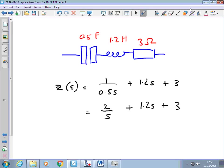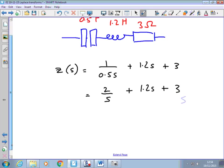Now I want to get them all over S, so what I do is I multiply top and bottom of this second term by S. I'm not changing the fraction. And I multiply top and bottom of this fraction by S. So they're all over S, and then I can combine them. So I end up with 2 plus 1.2S squared plus 3S over S.